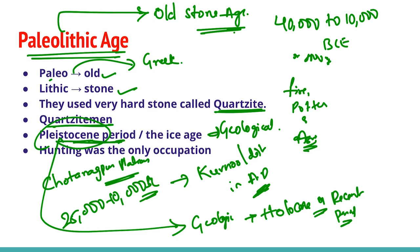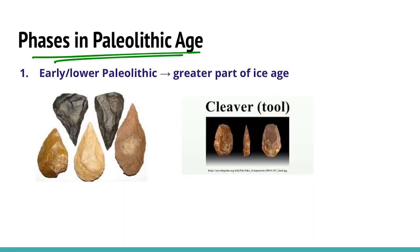The Old Stone Age or Paleolithic age in India was divided into three phases according to the nature of stone tools used by the people and the nature of climate change. The first phase is called Early or Lower Paleolithic, the second phase is called Middle Paleolithic, and the third phase is called Upper Paleolithic.